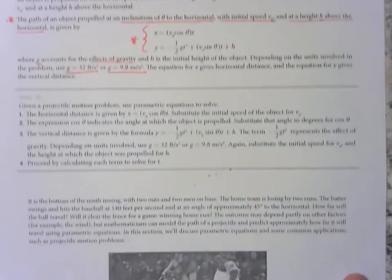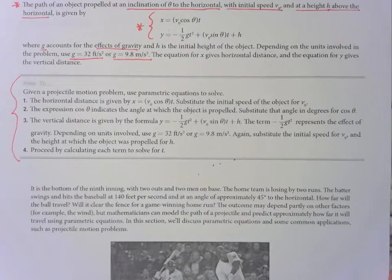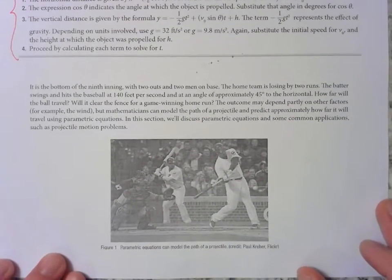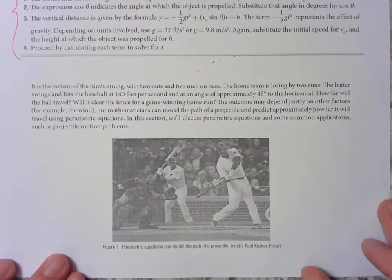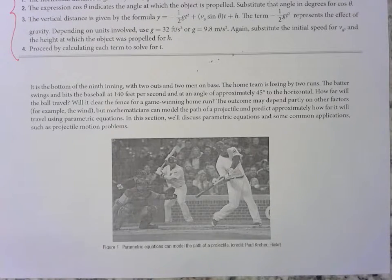We do have our nice little how-to right here, but we're hopefully going to just work through that in this first example. I know this is really small writing, I hope you can read it. It says, it is the bottom of the ninth inning with two outs and two men on base. The home team is losing by two runs. The batter swings and hits the baseball at 140 feet per second and at an angle of approximately 45 degrees to the horizontal.